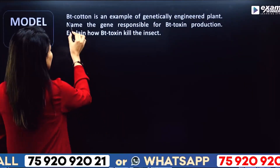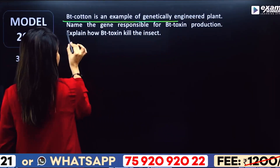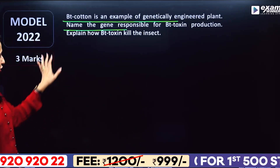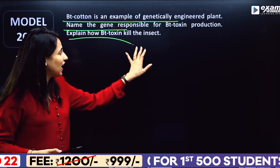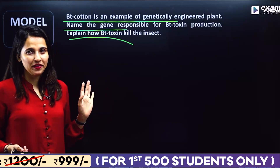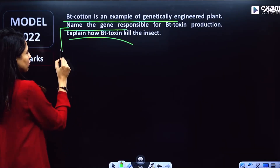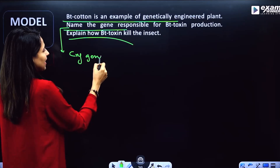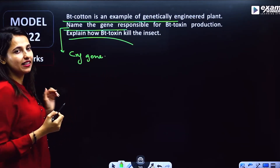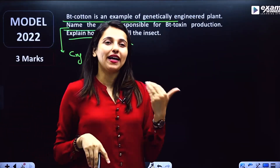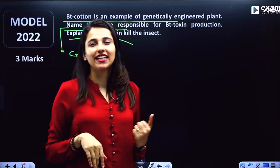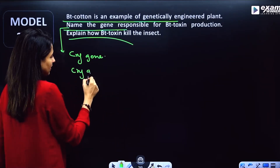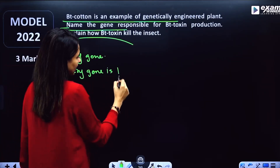Bt cotton is an example of a genetically engineered plant. Name the gene responsible for Bt cotton production. Explain how Bt toxin kills the insect. The gene is the Cry gene, produced by Bacillus thuringiensis (Bt) bacteria.